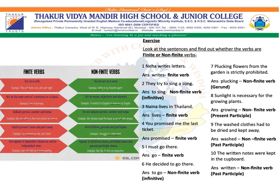Third sentence: 'Naina lives in Thailand.' Again, 'lives' is a finite verb. The fourth sentence: 'You promised me the last ticket.' Here the verb is 'promised', and again it is a finite verb. Fifth sentence: 'I must go there.' 'Go' is again a finite verb. But in the sixth sentence, 'He decided to go there', so 'to go' is a non-finite verb, and it is an infinitive.